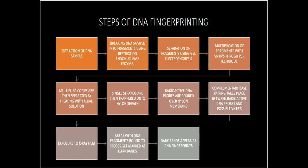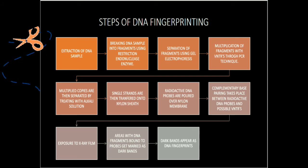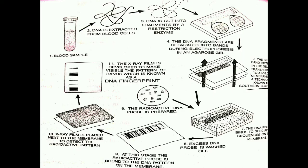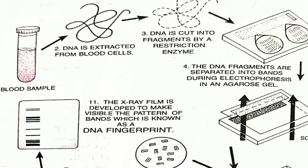The second step is breaking the DNA sample into fragments using restriction endonuclease enzyme. This enzyme plays a very important role in biotechnology — we call it molecular scissors. It breaks DNA into smaller fragments internally. The resulting fragments contain the VNTRs — the variable number of tandem repeats used for DNA fingerprinting.